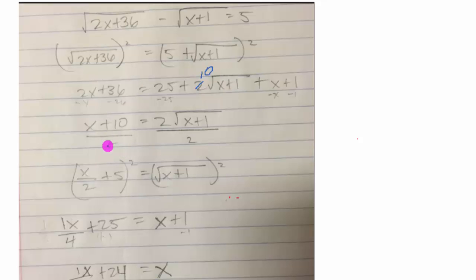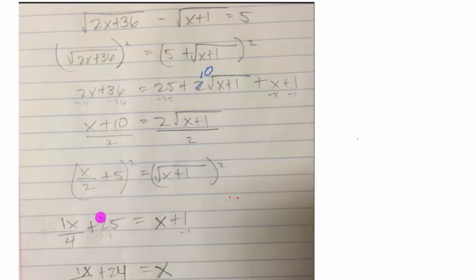The next error is squaring the two terms on the left. This is a binomial, so you need to write it twice and remember there will be a middle term. Simply squaring each term individually gives x squared but misses that middle term — that was the second error on this problem. Hope this video helps!